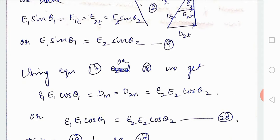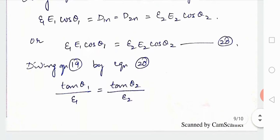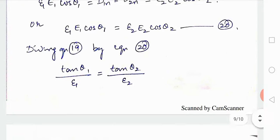From this and D1n equal to D2n that is also we have found, therefore we can write that epsilon 1 E1 cos theta1 is equal to epsilon 2 E2 cos theta2. That is your 20th equation. Dividing both these equations you will get tan theta1 by epsilon 1 is equal to tan theta2 by epsilon 2.